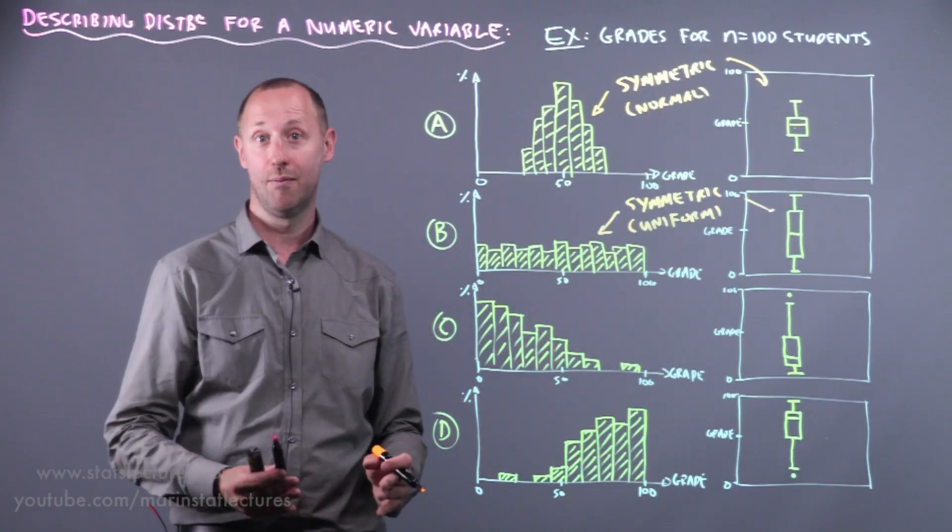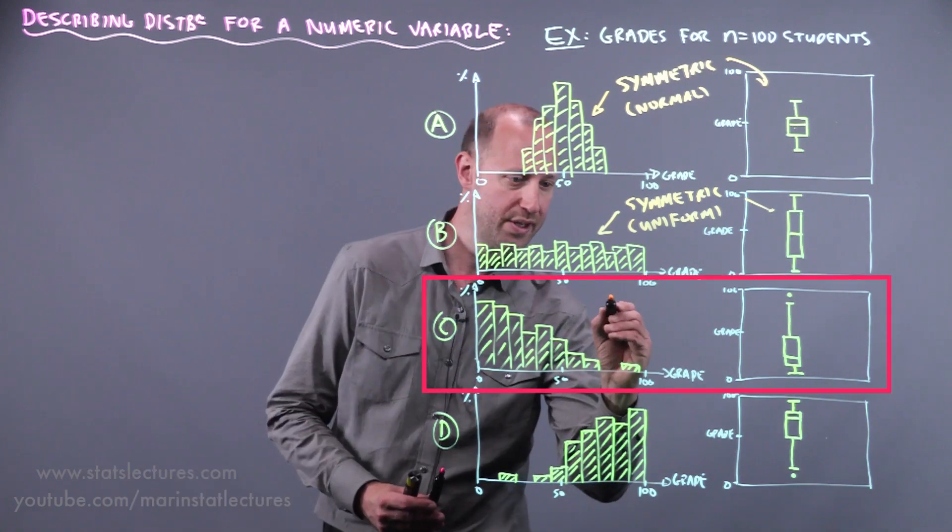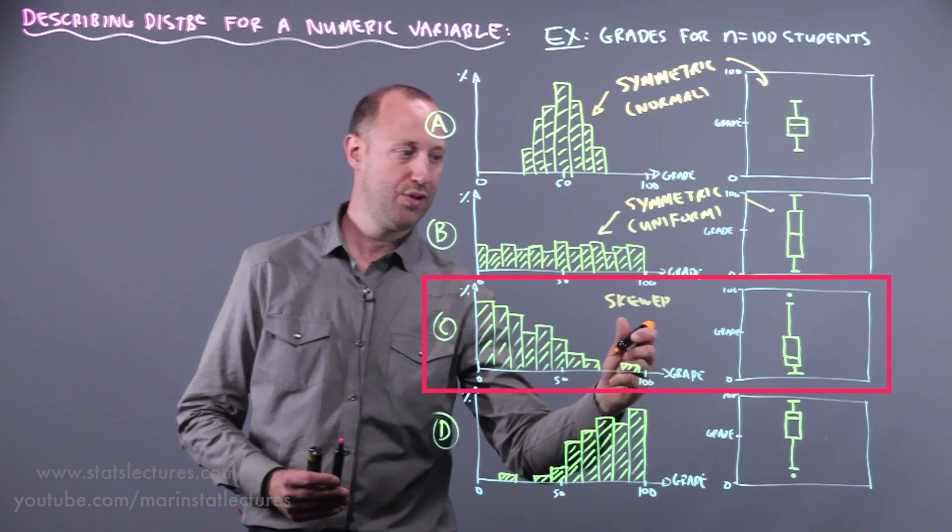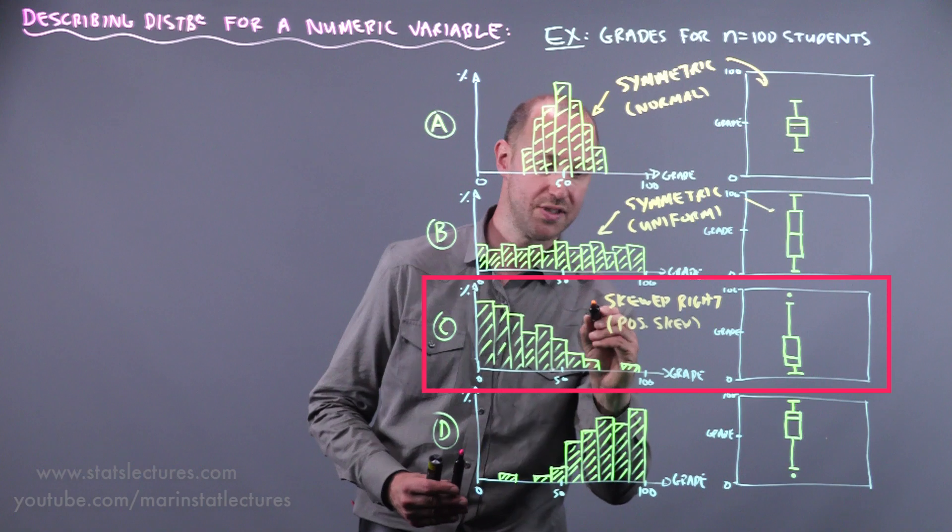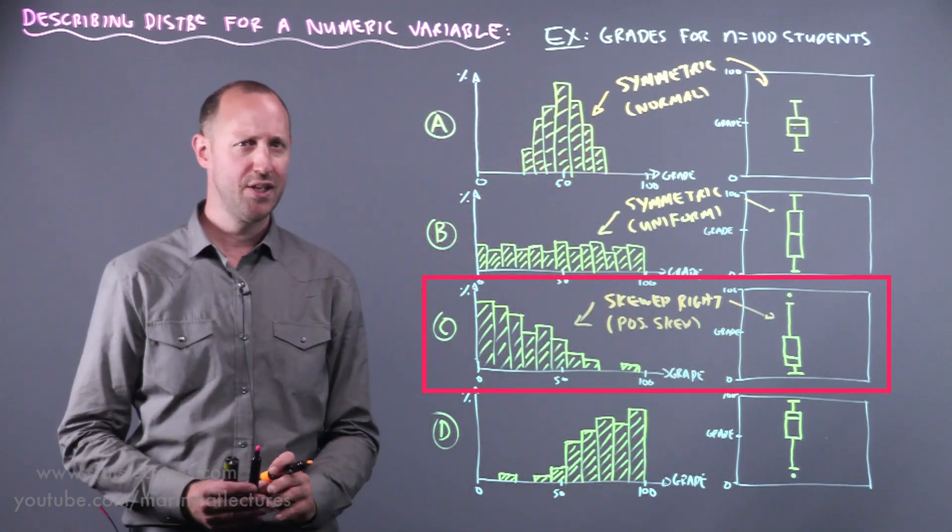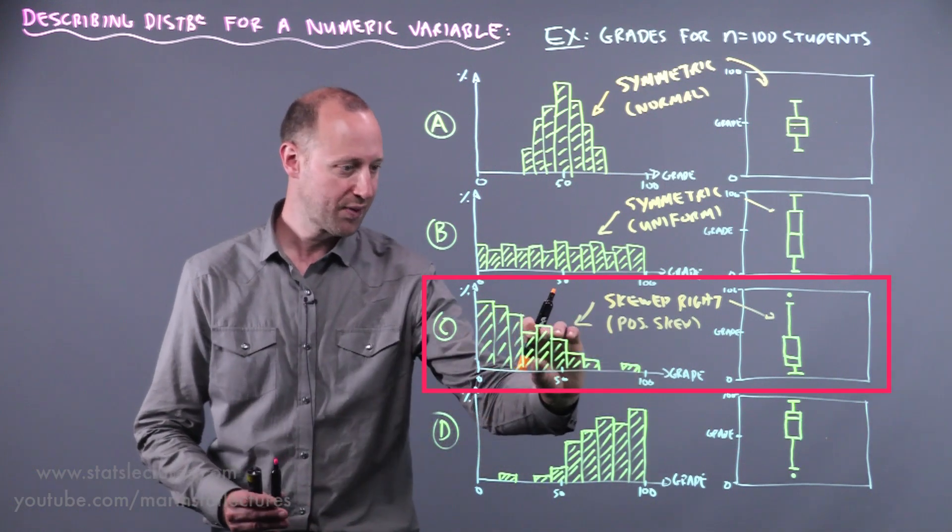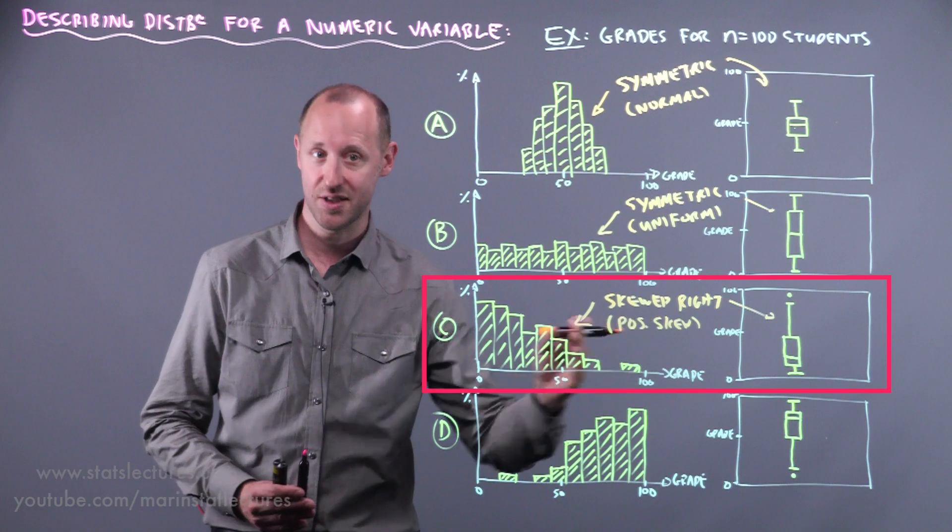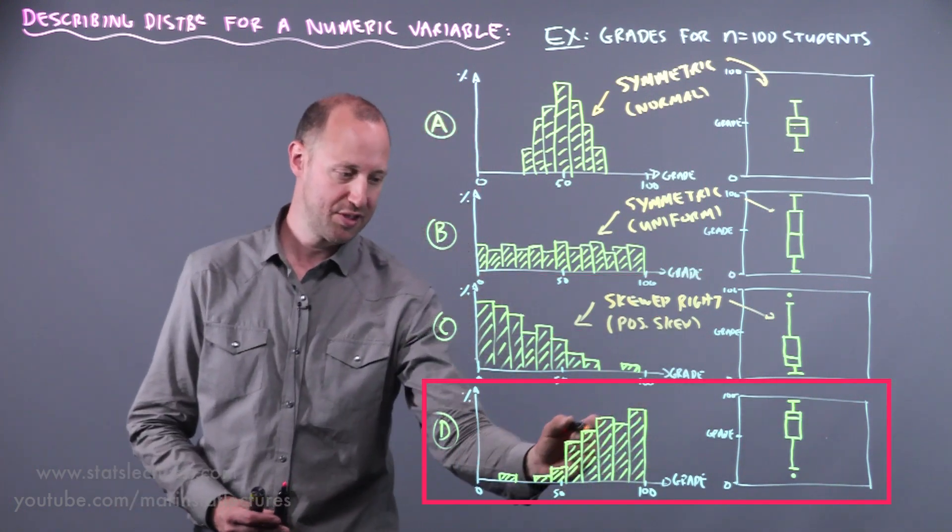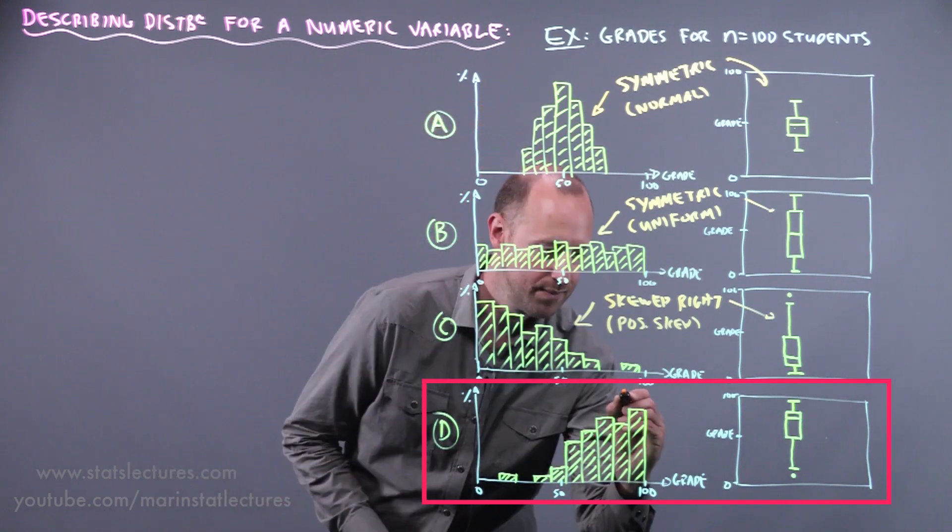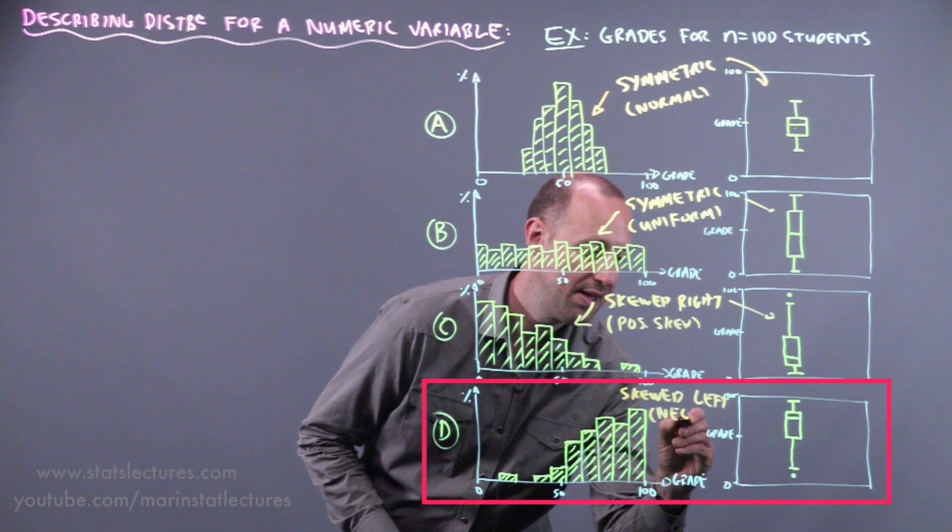Then these two here look what we call skewed. They're not symmetric; they kind of tail out strongly to one side. This one here is skewed, and it's skewed to the right or what also gets called positively skewed. Now the terminology can be a little bit confusing at first, but we say it's skewed in the direction where it tails out, where the long tail is. So this is skewed towards the right side or towards the positive or increasing numbers. So we'd call this skewed right. And this here again looks a little bit skewed and it's tailing out towards the left. So this we'd say it's skewed to the left or it can be called negatively skewed.